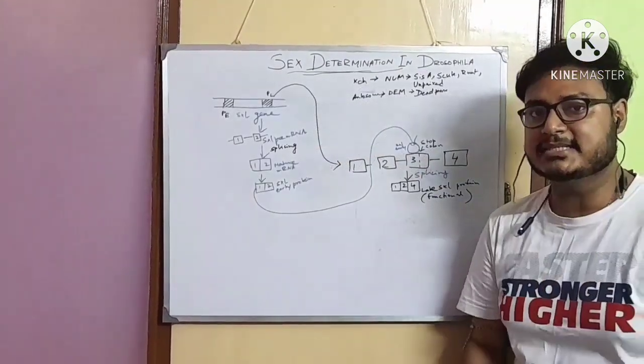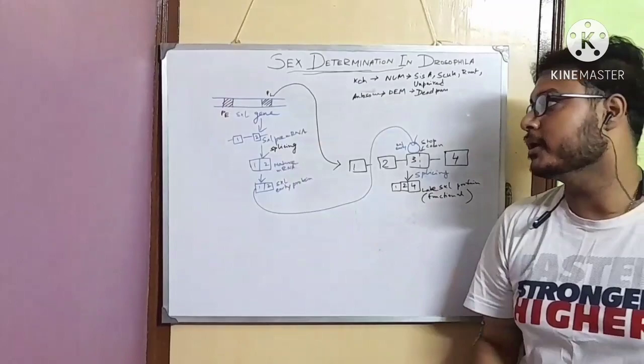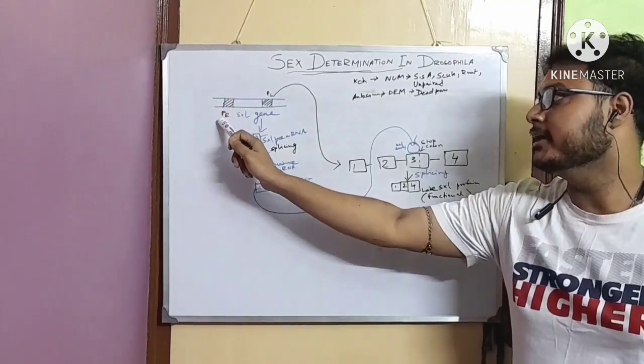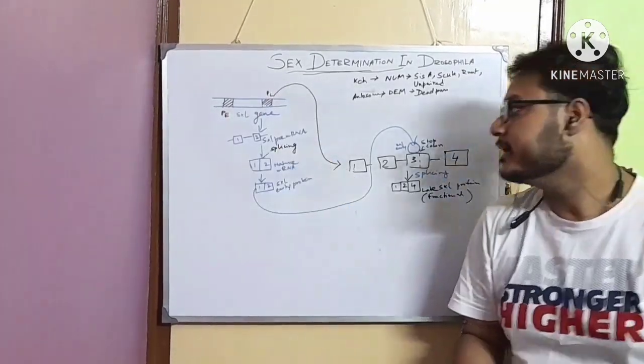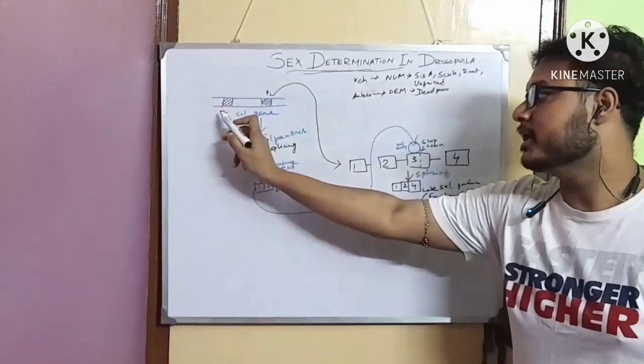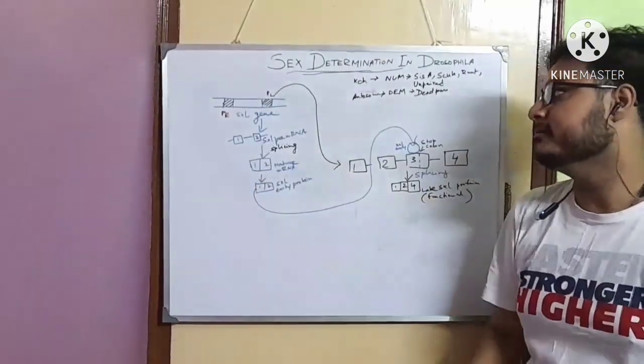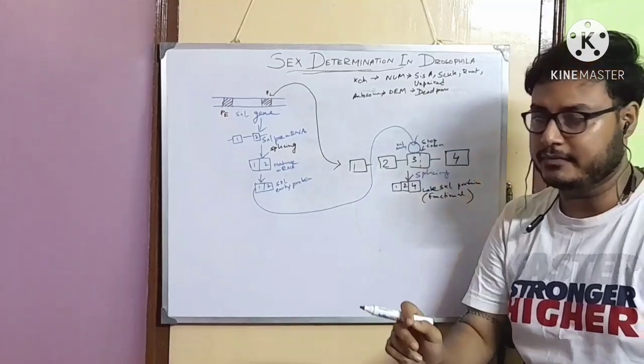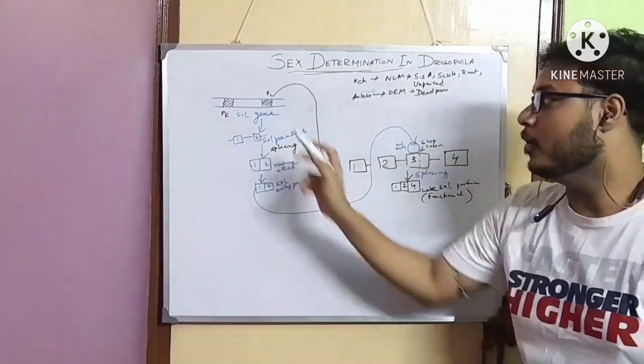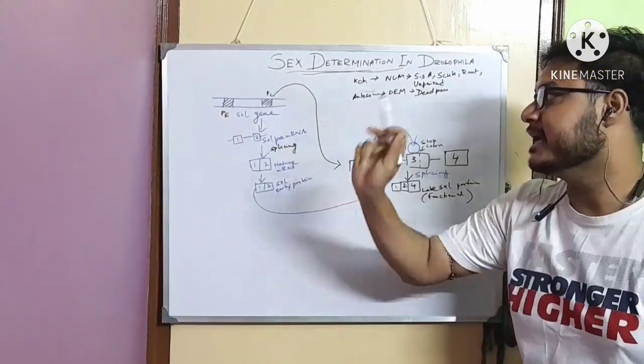This SXL gene has two promoters: promoter early and promoter late. In females, both promoters are active. But in males, only the promoter late is active.